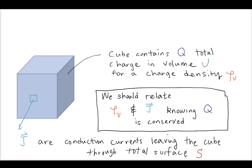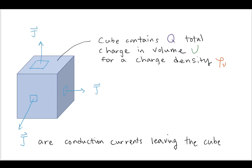So we want to relate the charge density, ρv, inside of the cube with the current density J, knowing that Q is conserved, and that conservative property just means that the charges are neither being created nor destroyed, which is a fundamental piece of knowledge that we studied earlier.